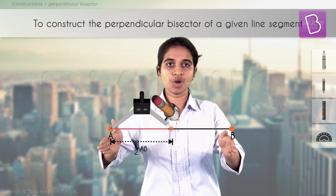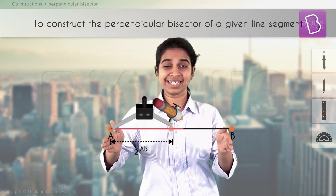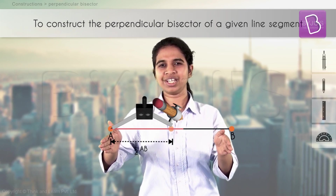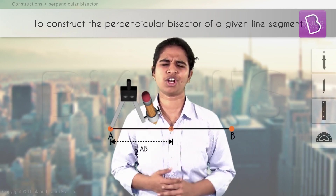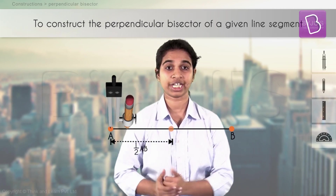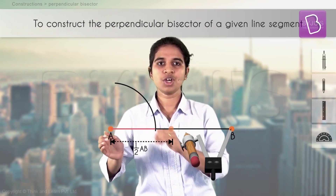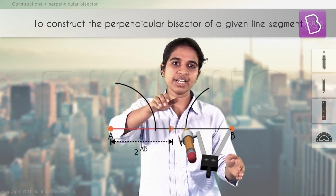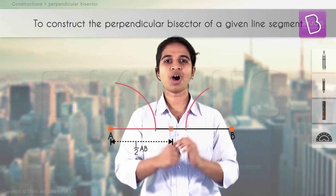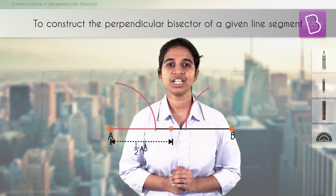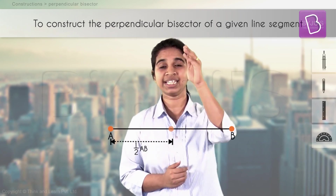Why more than half of AB? Let's try taking less than half. You already know the construction — now we are trying to understand the logic. Let's try taking less than half: draw an arc, move the leg of the compass to the other side, draw an arc again. What do you see? The two arcs never intersect with each other.